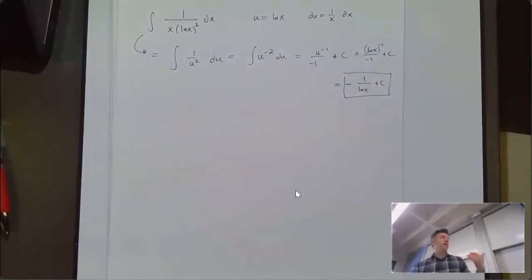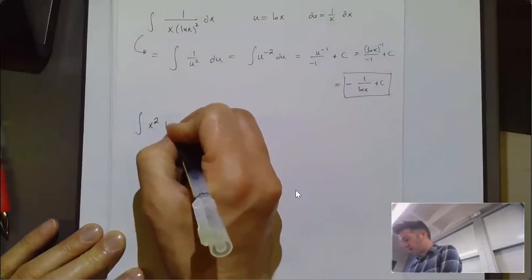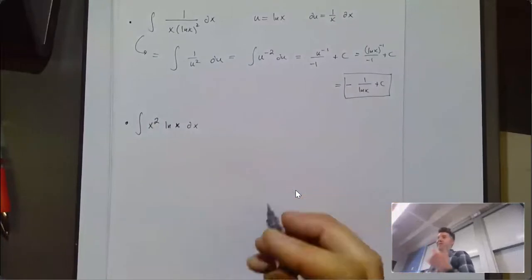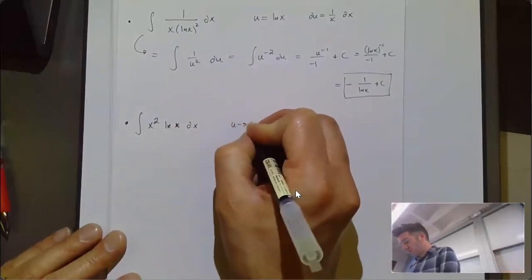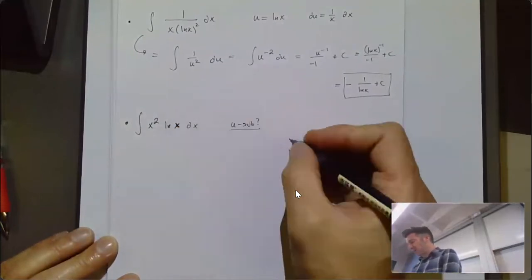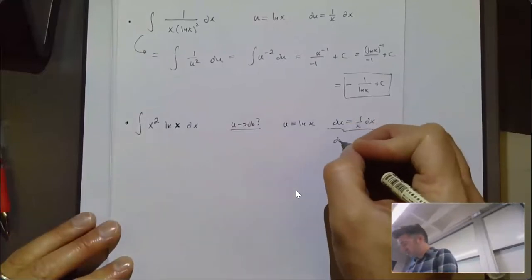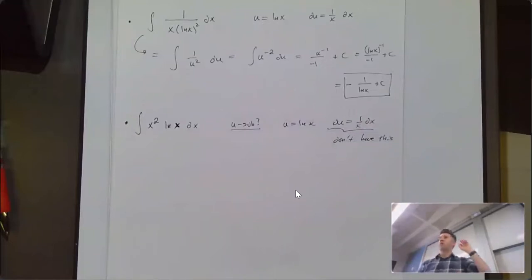I really can't stress enough: definitely try a u-sub before jumping to integration by parts. Now let's look at the integral of x²·ln(x) dx. If I tried a u-sub, the only plausible choice would be u equal ln(x), but my du would be 1/x dx, and I don't have that. So this mixture probably isn't going to work for u-substitution. I should try integration by parts, but always ask: can I do a u-sub first?